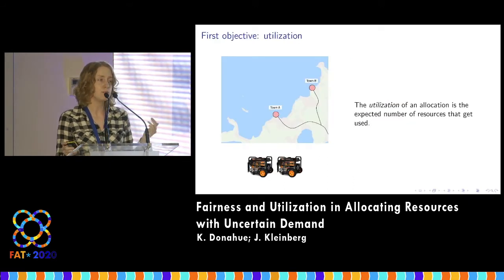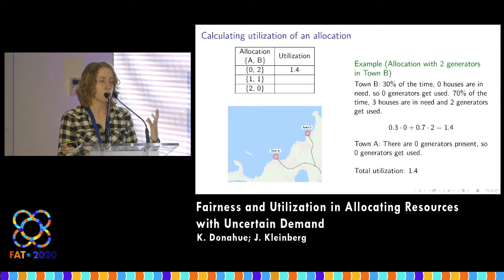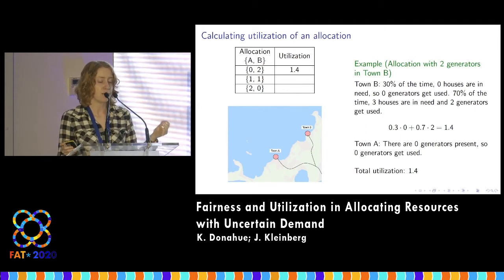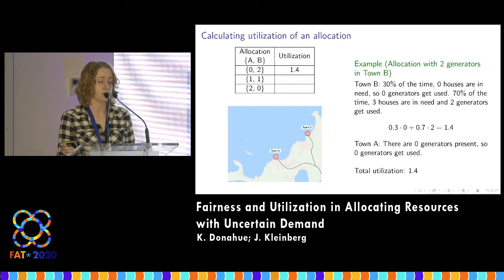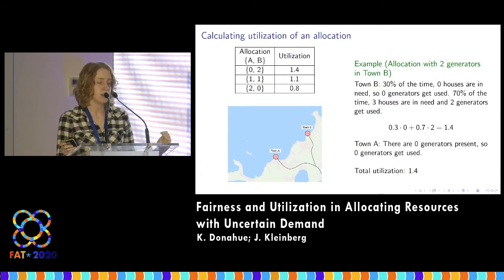Going back to the example, one objective we use is utilization — the expected number of resources that get used for a given allocation. For the allocation with both generators in town B: 30% of the time there are no houses in need, so zero generators get used; and 70% of the time three houses are in need, so two generators get used. The utilization in town B is 1.4, and town A contributes nothing, so overall utilization is 1.4. This allocation maximizes utilization, which is our goal.